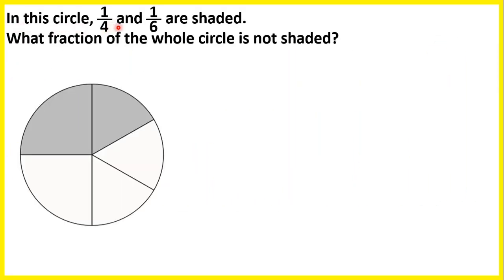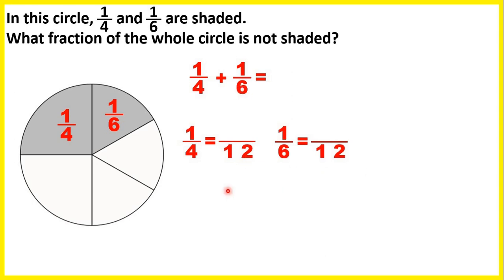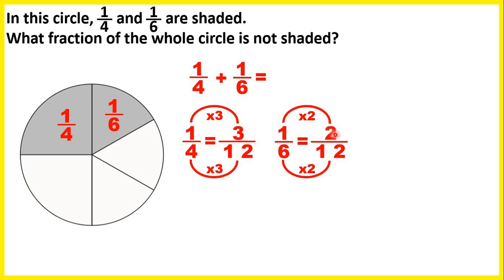In this circle, 1 quarter and 1 sixth are shaded. What fraction of the whole circle is not shaded? First we find the fraction that is shaded by adding 1 quarter and 1 sixth. To add fractions we need the same denominator, and 12 is in both the 4 and 6 times tables. So instead of 1 quarter we have 3 twelfths, and instead of 1 sixth we have 2 twelfths, giving a total of 5 twelfths shaded.